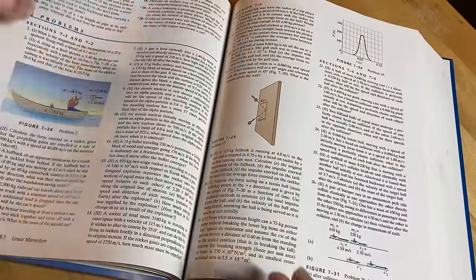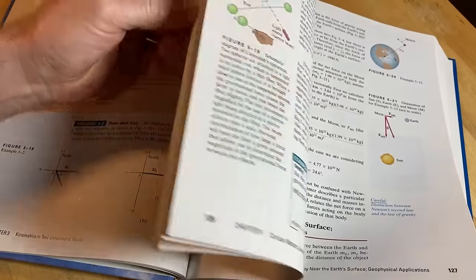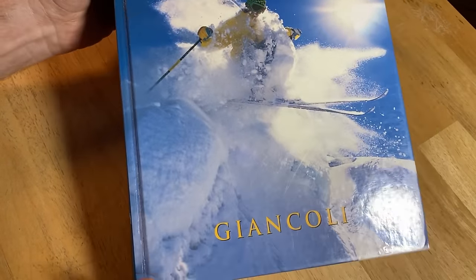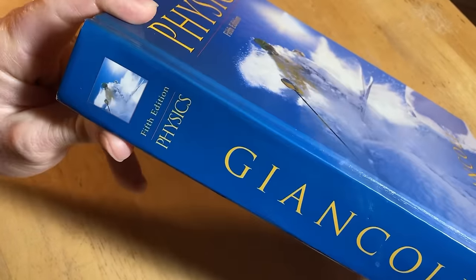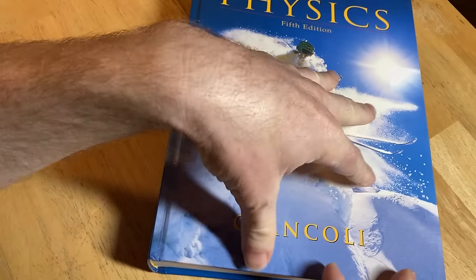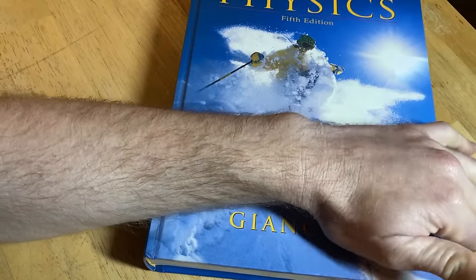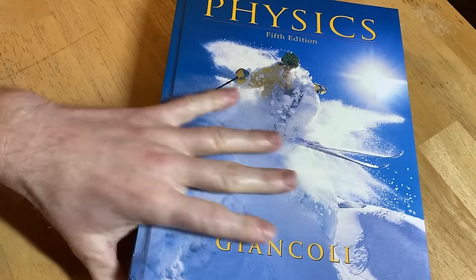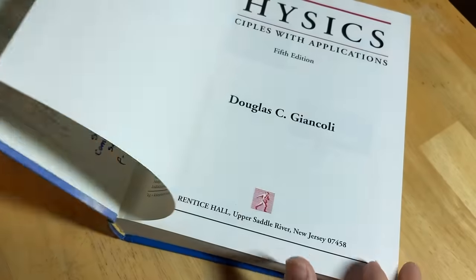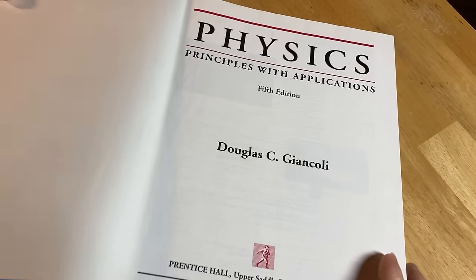So this is a book that you can use to learn physics. In this video we're going to take a look at it. It's called Physics by Giancoli. This is an older edition, the fifth edition. There's newer editions out now and I don't really think it matters so much what edition you get. I'll leave a link in the description to an edition of this book in case you want to check it out, because you can use this to teach yourself physics. It's got so much material in it, it's pretty ridiculous. Physics: Principles with Applications, Douglas C. Giancoli, Fifth Edition.